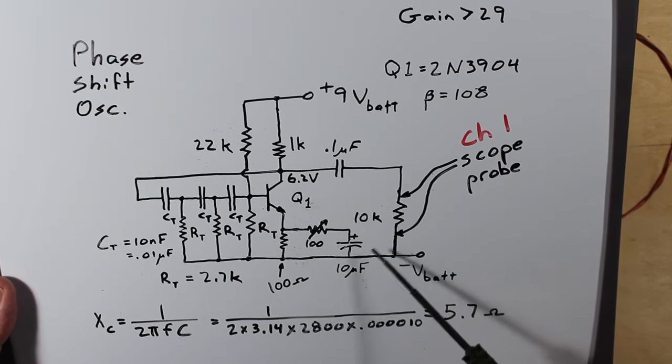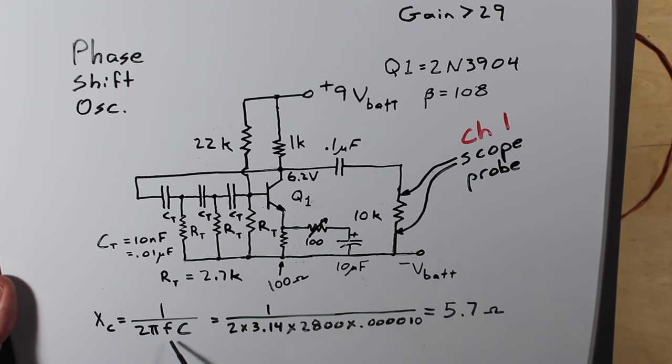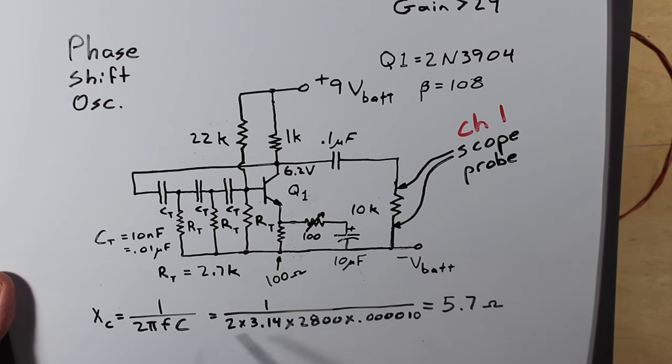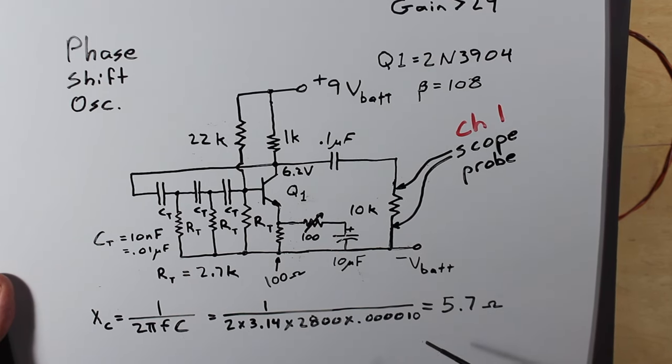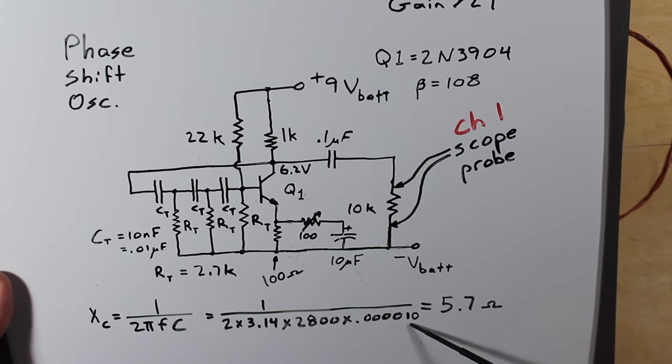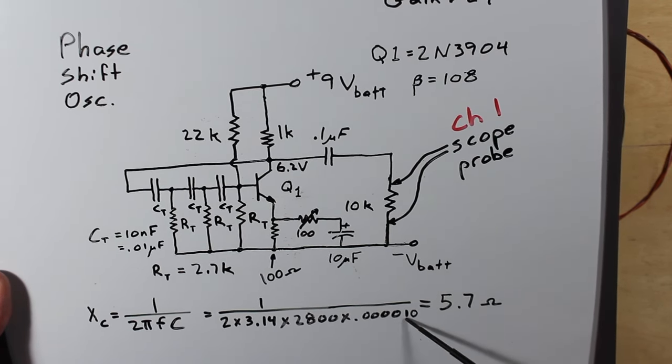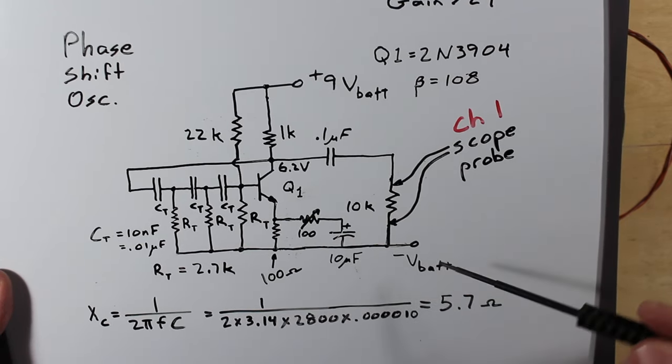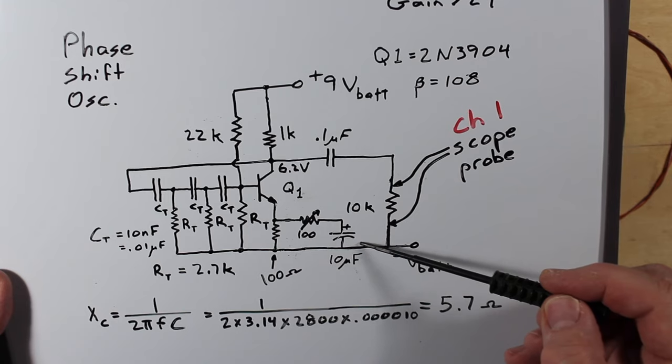So to figure this out here, we take two times pi, times our frequency, 2800 hertz, times the size of the capacitor, which is 10 microfarads. At this frequency, and at this frequency basically only, this is a six ohm load here.